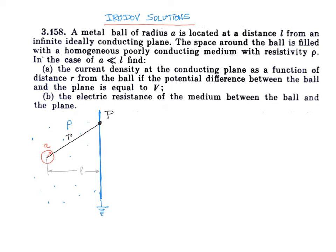Using the image method: for this configuration, there will be an image charge at the same distance l on the other side of the plane, exactly like a mirror image with a negative charge. This image ball is also of radius a. Suppose the charge on the ball is q; then the image charge will be exactly minus q.